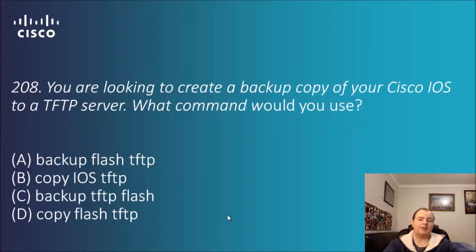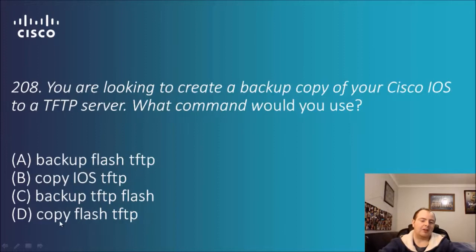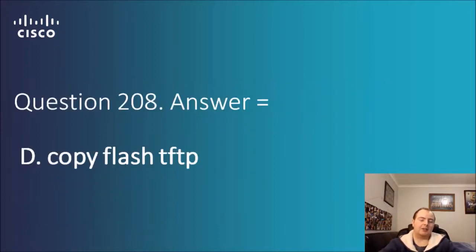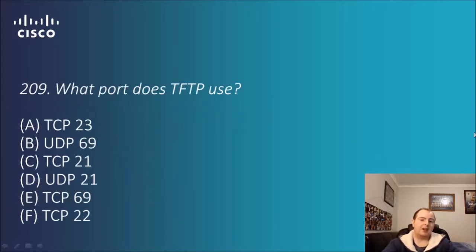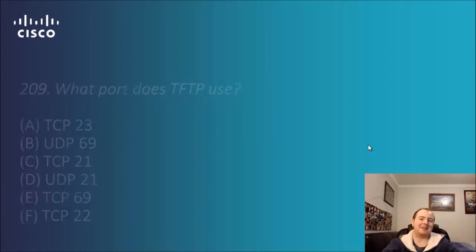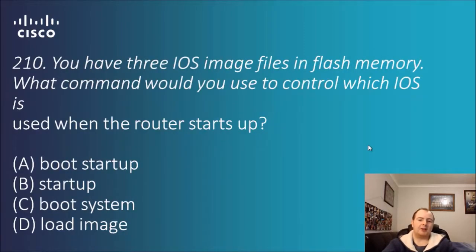Question 208: you are looking to create a backup copy of your Cisco IOS to a TFTP server. What command would you use? Options include backup flash TFTP, copy IOS TFTP, backup TFTP flash, and copy flash TFTP. It's going to be 'copy', and it's not 'IOS' because flash is essentially where IOS is stored. So 'copy flash TFTP' is the answer. Question 209: what port does TFTP use? TFTP is a connectionless protocol using UDP. The answer is port 69.